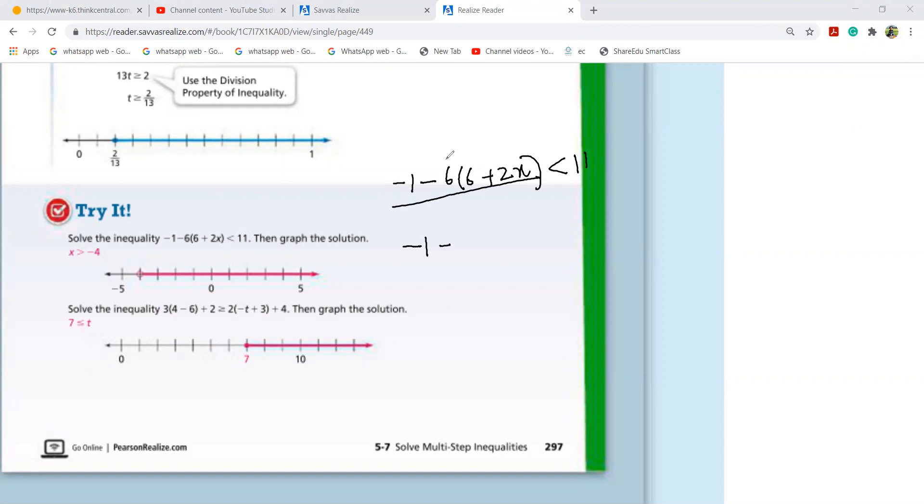Minus one. I'll just open all of it. Six times six is 36. I told you when minus sign is outside, you need to change the sign inside. 12X. The search for the same family. This is the same family. You don't have any 12X. Minus 37 minus 12X. It's less than 11.